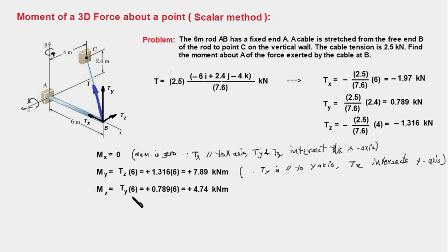The component Ty is going to cause rotation in this direction; therefore its moment is going to be anticlockwise and therefore be positive. So Ty times 6 is the moment about Z axis. We plug in the value of Ty, and the moment Mz works out to 4.74 kilonewton meter. The moment is 0 because Tz is parallel to Z axis and Tx intersects Z axis.